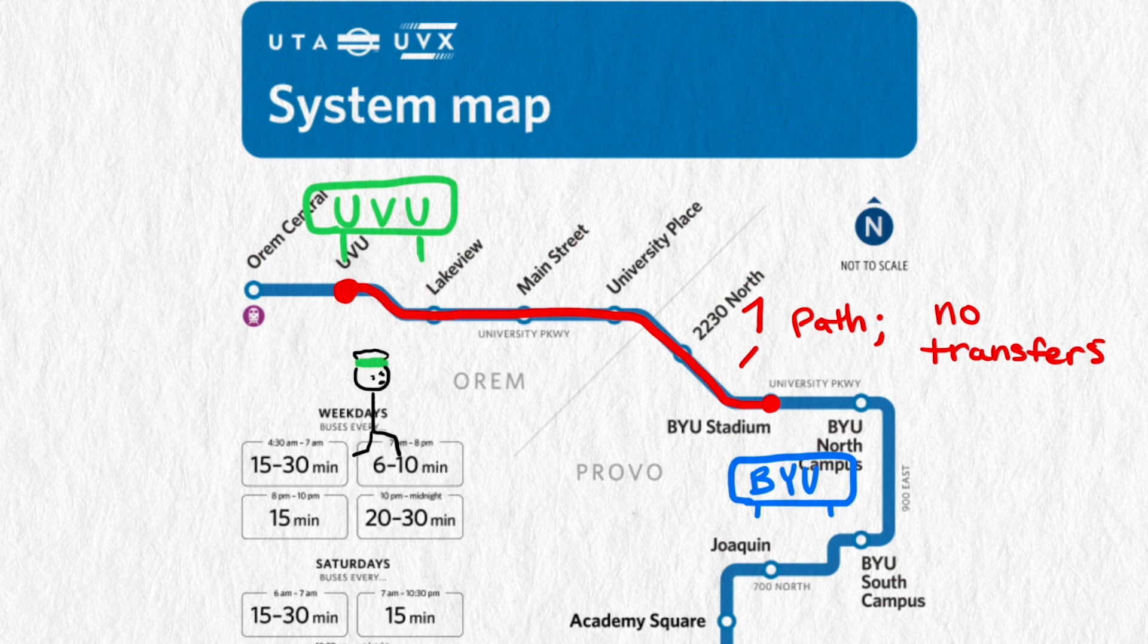I'm going to use that as the total distance someone is traveling in my model. One advantage of picking this distance and path is that we can compare our results to the actual number and spacing of bus stops. After all I'm trying to prove that the engineers made a mistake.